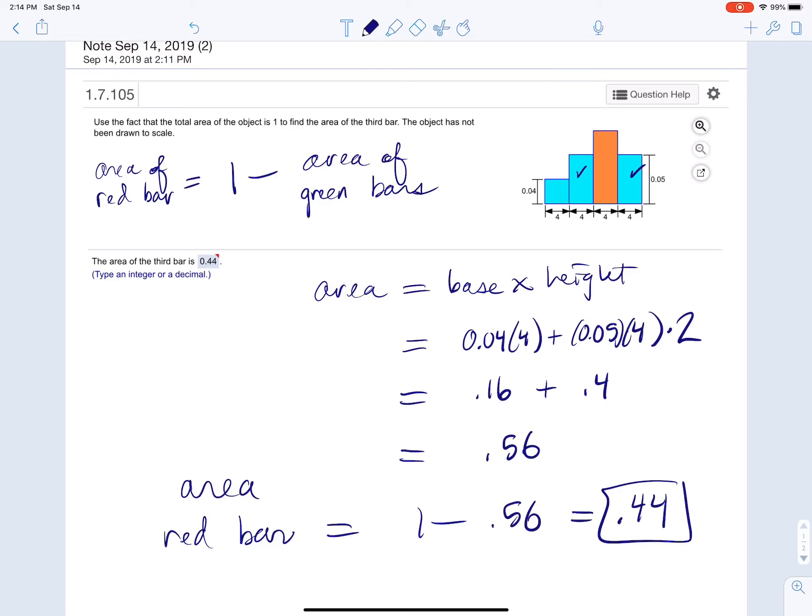So we call this the complement. We're going to do the complement. So since all the area of the whole thing equals one, you just do one minus the blue to get the red. That's it.